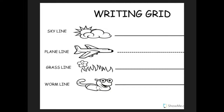C. Letter C is a plain line round letter. Put your pencil on the plain line, fly backwards, curve to the grass line, and you're done. C, cat, k.